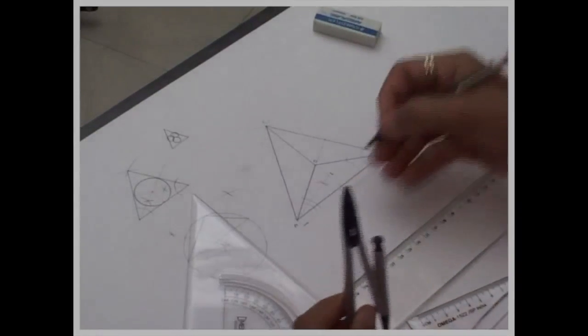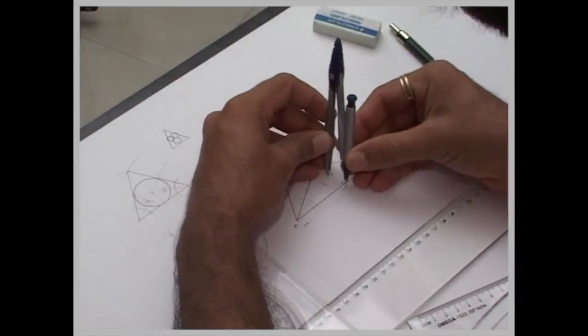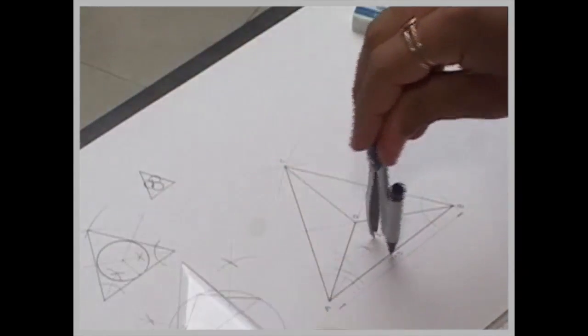Now I will take one to n as radius, draw an incircle.